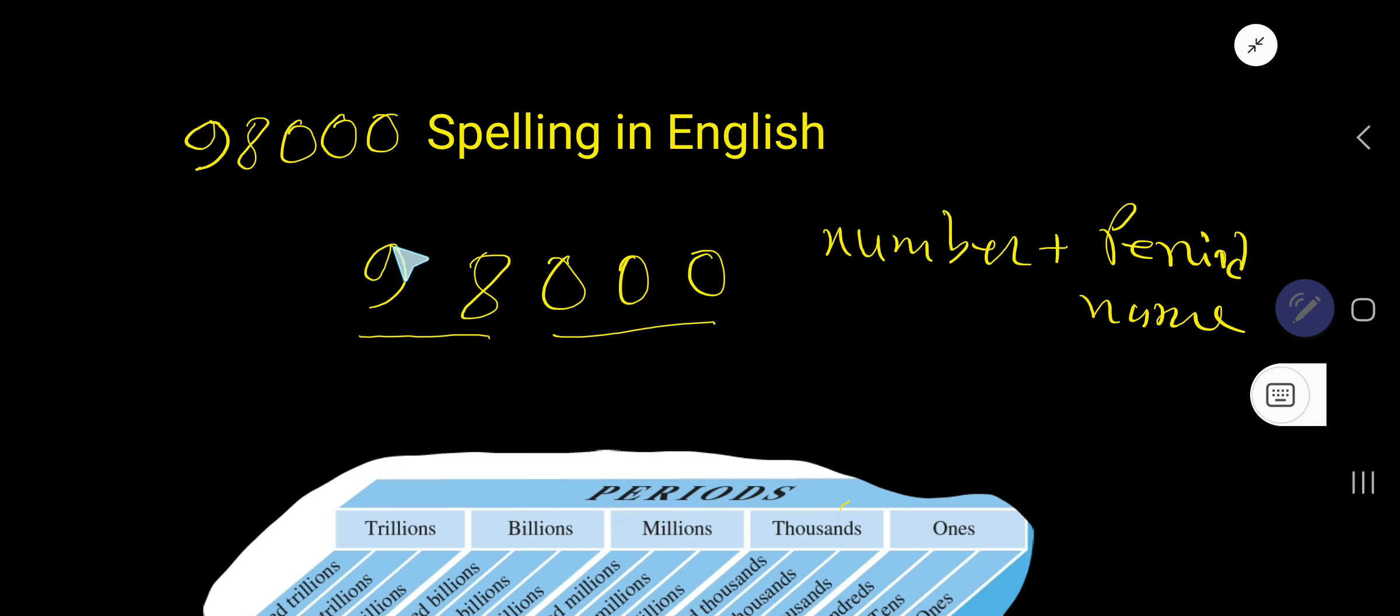So write here 98 - ninety-eight - the number plus the period. 98 is in thousands period, so write it: thousand, T-H-O-U-S-A-N-D - ninety-eight thousand. Here we are using a hyphen.